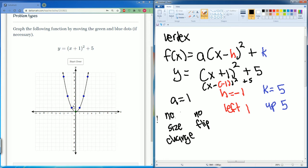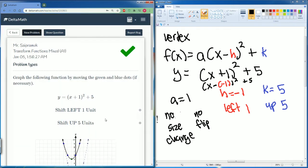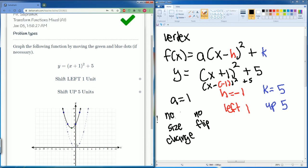So the only thing that happens here is we go left 1. So I move this left 1. Then we go up 5: 1, 2, 3, 4, 5. And then we hit submit. There you go. That is what happens when we have a vertical and a horizontal translation. Let's do one more problem.